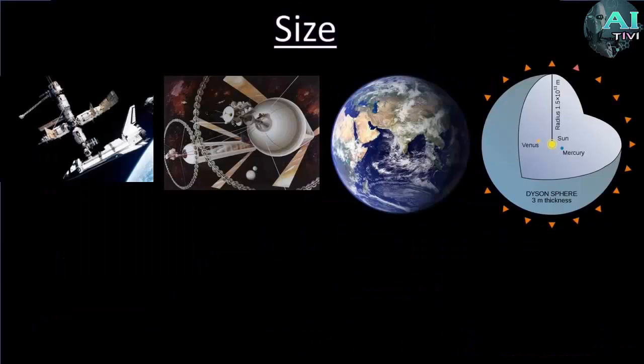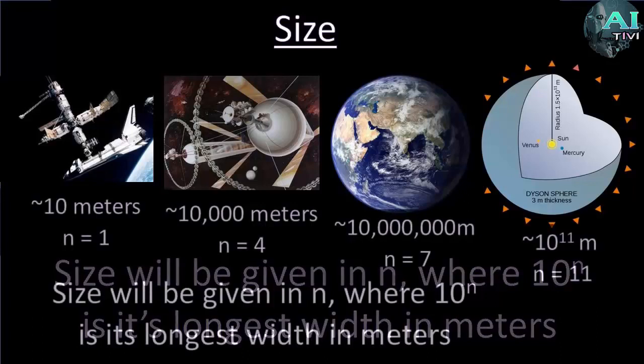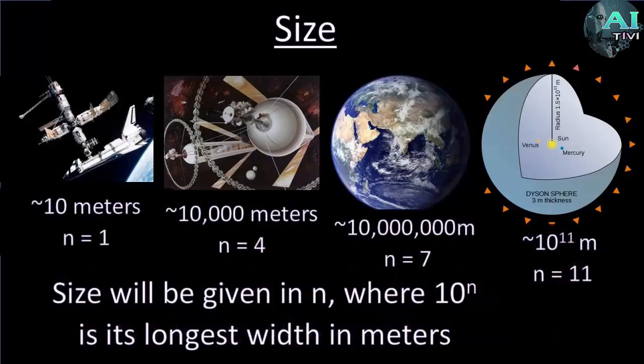Our next category that we'll be looking at for a classification system is size. These things again can range from the size of the space station all the way up to things as big as the solar system. So we have a set order of magnitude scale to look at this. We'll give a number, n, where n is 10 to the nth power in terms of its width in meters. So n equals 1 would be 10 meters, n equals 2 would be 100 meters, n equals 3 would be 1000 meters, n equals 6 would be a million meters, and so on.